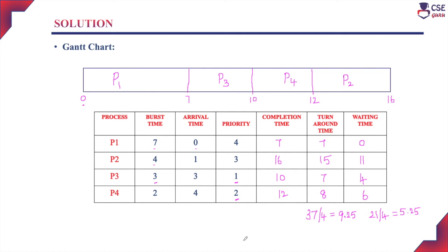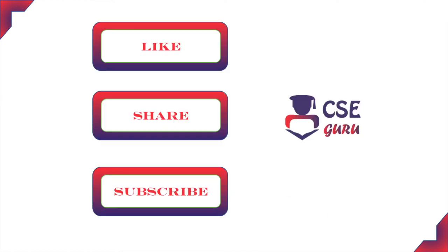So the average waiting time is 5.25 milliseconds and the average turnaround time is 9.25 milliseconds. In this session we discussed non-preemptive priority scheduling — once a process is assigned to the CPU for execution, it will not leave the CPU until its burst time is complete. In the next session, we will discuss preemptive priority scheduling. Thank you for watching this video.